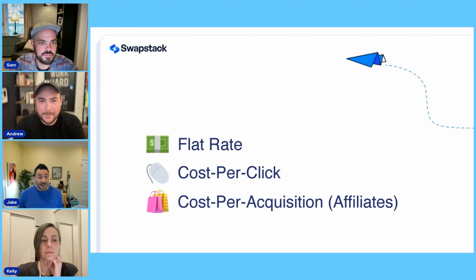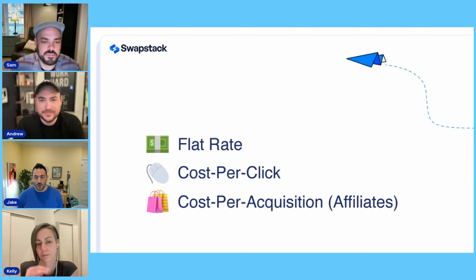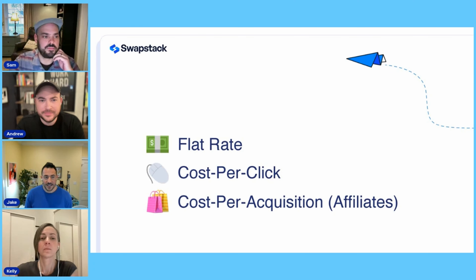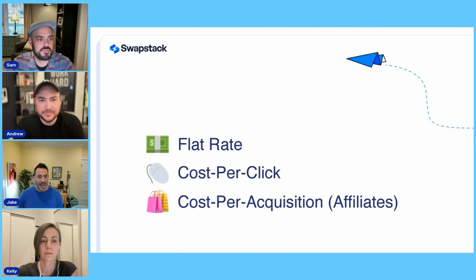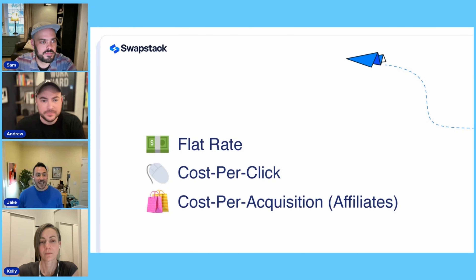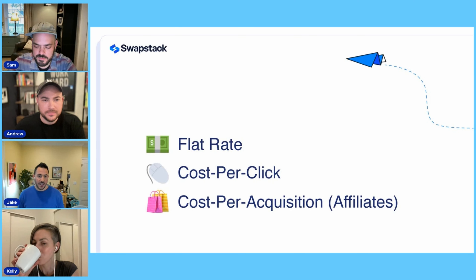SwapStack had a lot of features — it was an advertising platform. The easiest way to understand it is to talk through the types of advertising opportunities available to advertisers. This was general advertising industry stuff. Broadly speaking, we had three types of deals: flat rate, cost per click, and cost per acquisition. We'll go through each of these quickly.